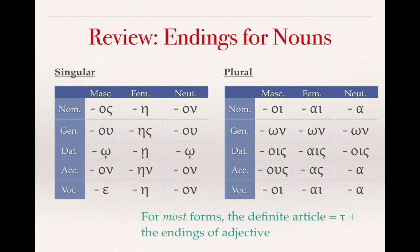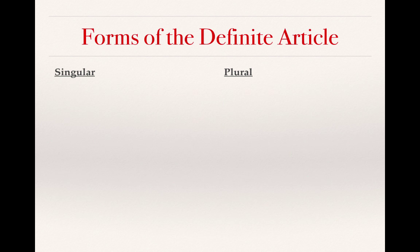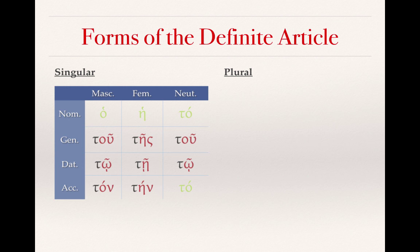For most forms, the definite article is simply going to be the addition of the letter tau to those endings. Let's see what that means. Starting with the singular definite article, the exceptions to the general rule — adding tau to the noun endings — are highlighted. The nominative singulars are all slightly different than what we would expect, and the neuter accusative is also different. But other than that, those endings are perfectly matched up, just joined to the tau.